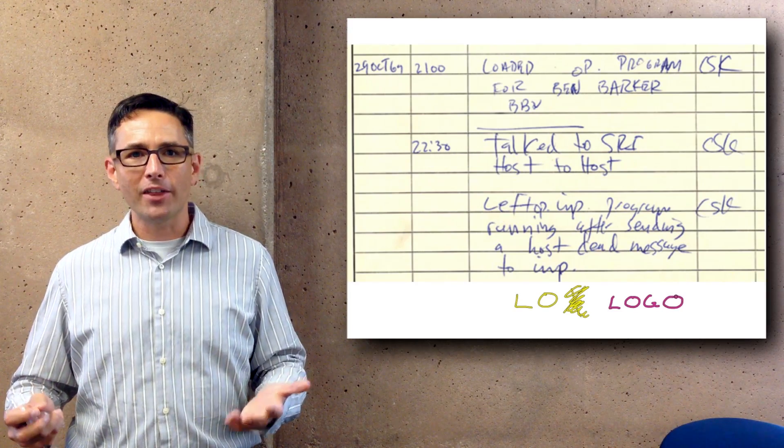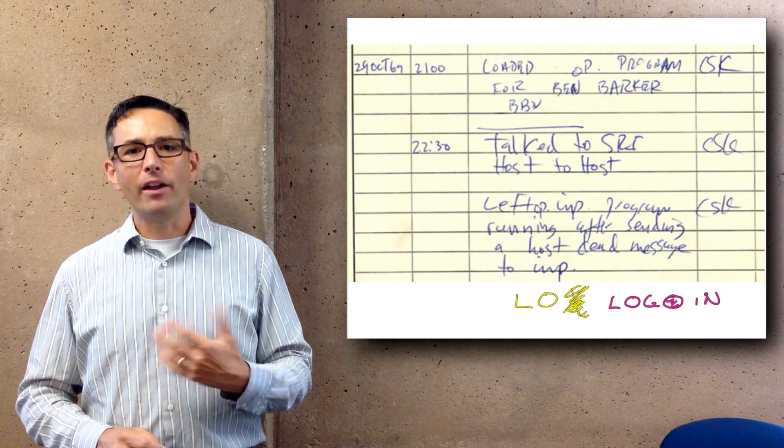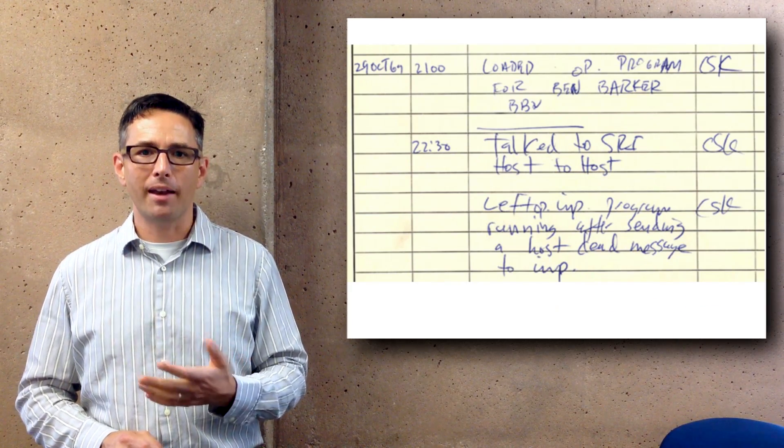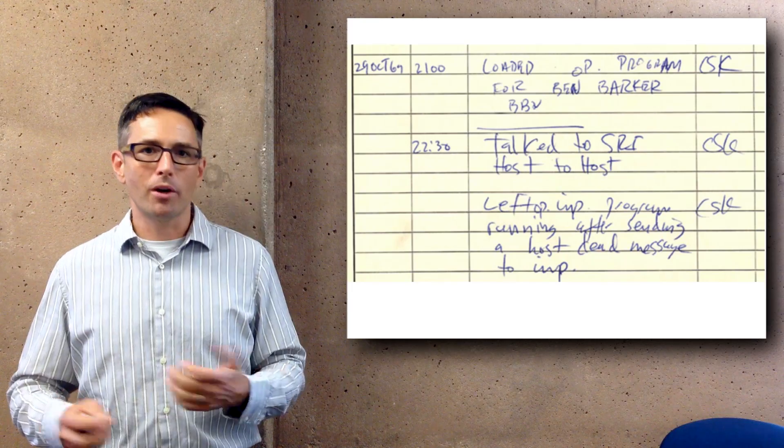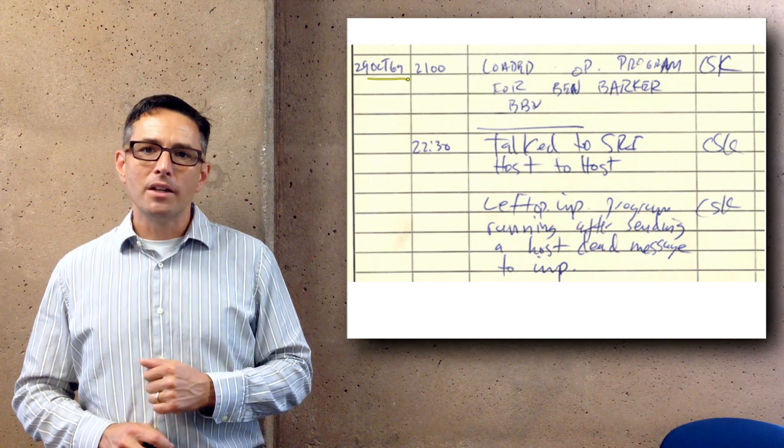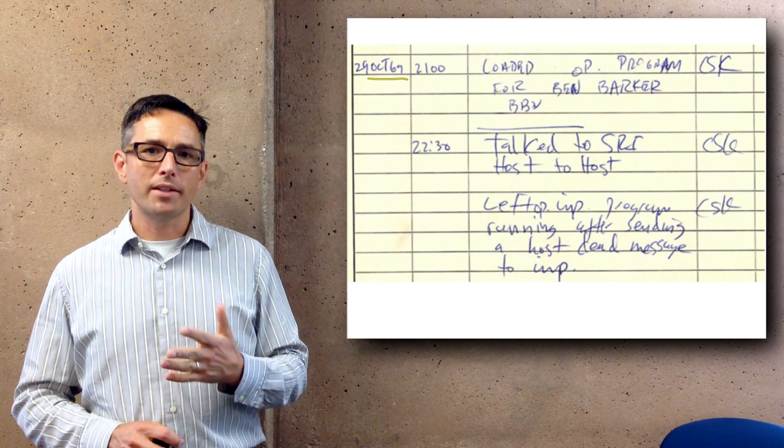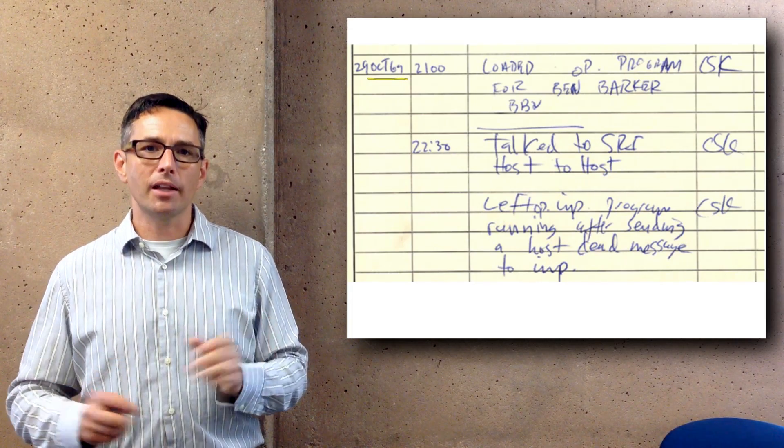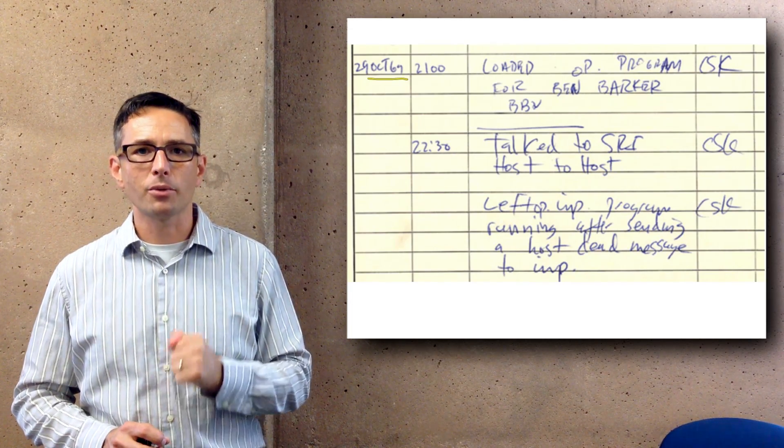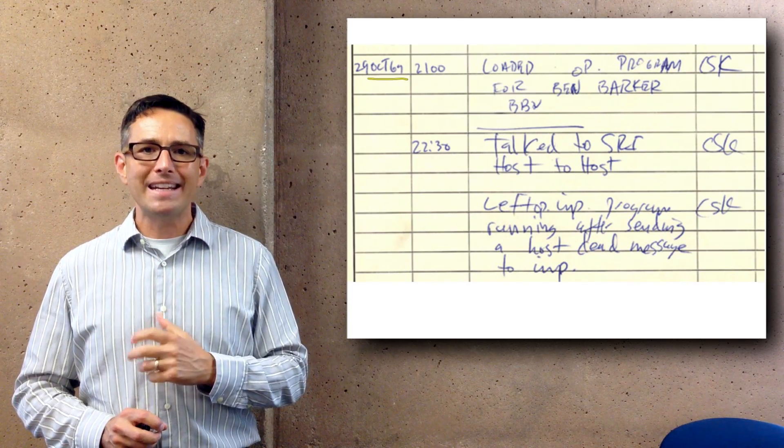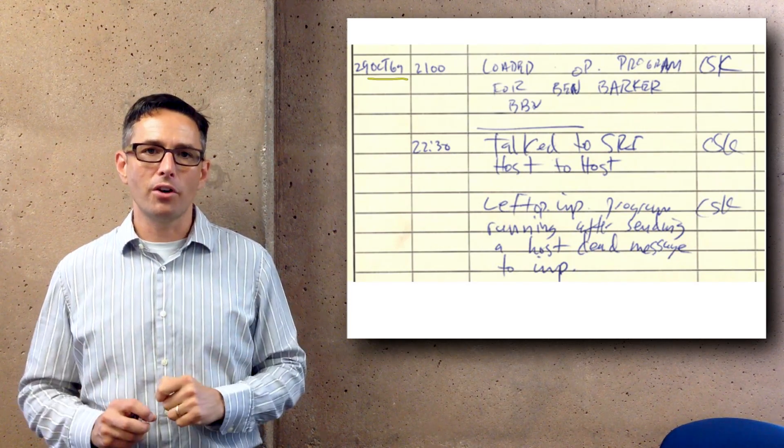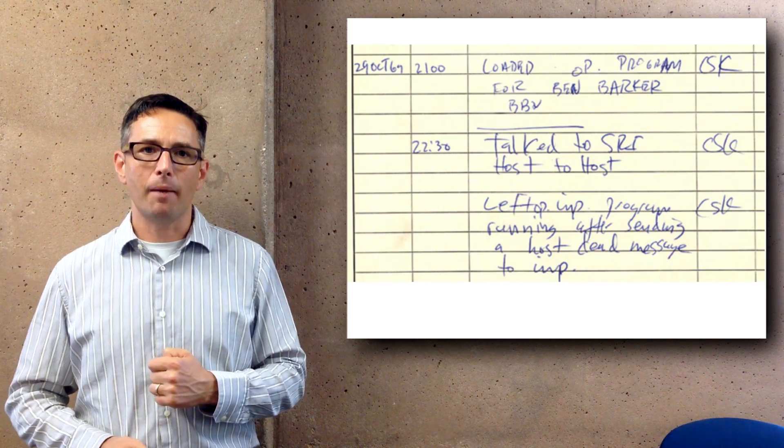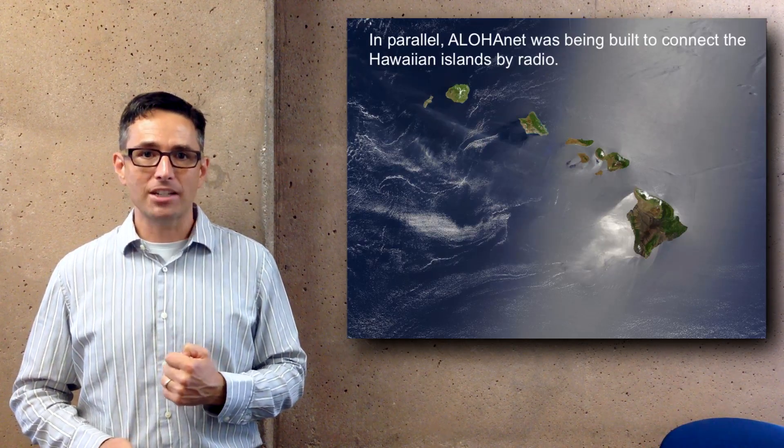About a couple hours later they got their computers back online and were able to successfully recover from the crash and send the complete command 'login.' And with that, the internet was born. That first link was in October of 1969. A permanent link was established about a month later on the 21st of November, and by December 5th, 1969, all four of those nodes had been connected in a permanent network sending packets back and forth.